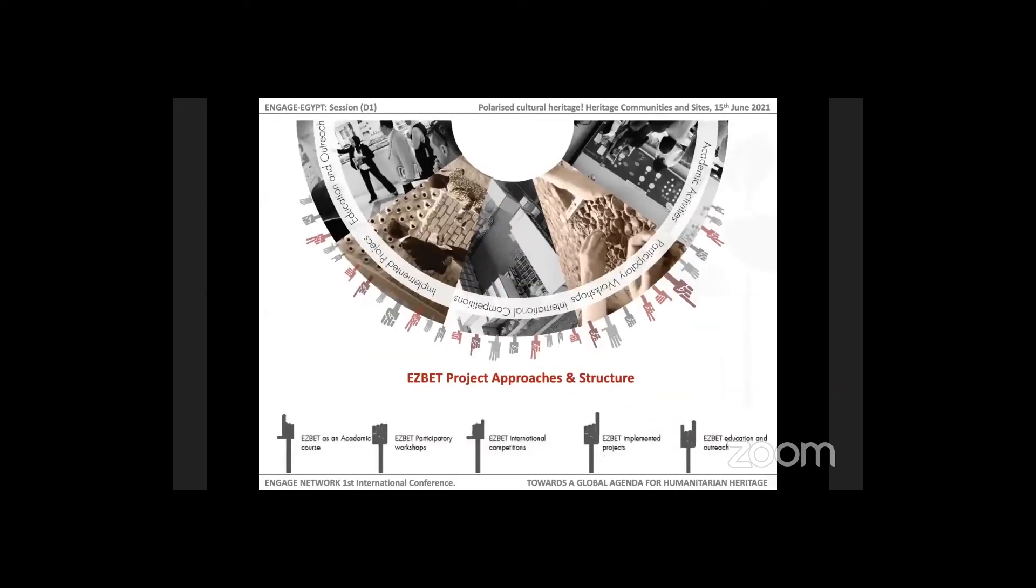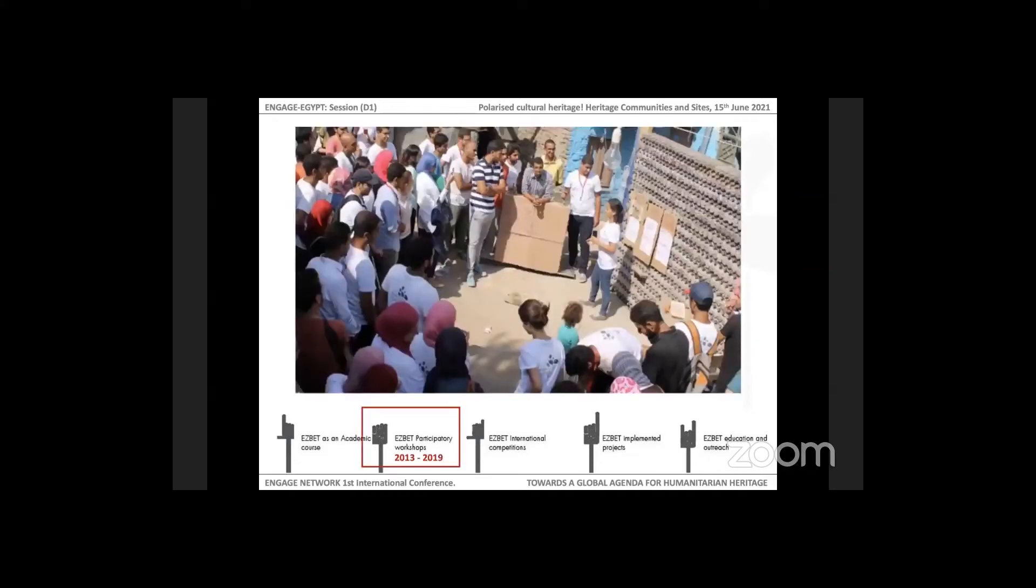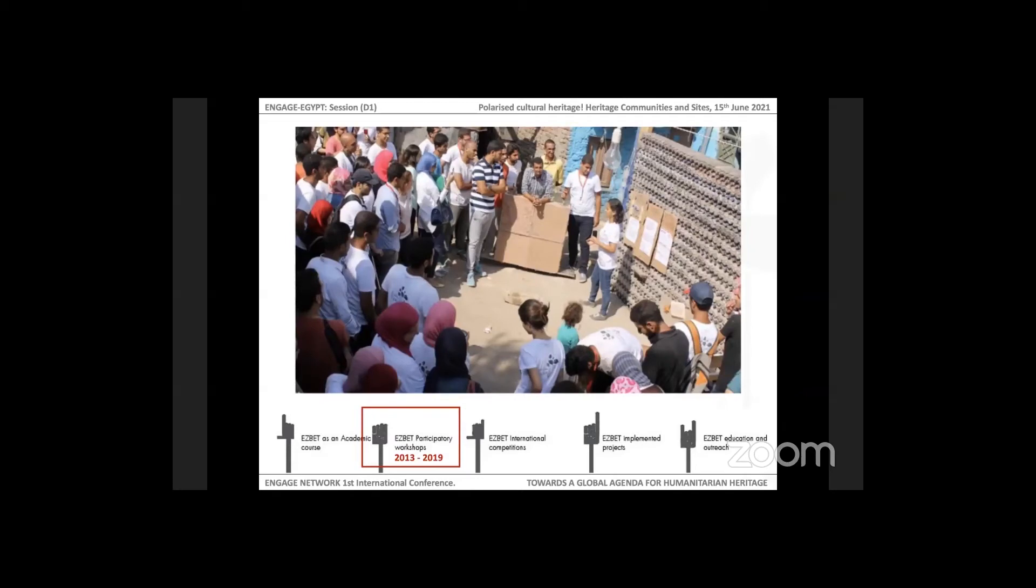This is our structure and approaches. Five working packages are designed to reach the best results towards the local community. Participatory workshops and activities are important parts of the Ezbet work. Here you can see how we develop the work together with students and community members. Our timeline of work shows the continuous and direct contact with the local community in order to understand deeply the context, also understanding the logic behind how they develop and form their physical and social fabric.